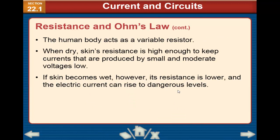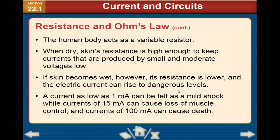The human body acts as a variable resistor. When the skin is dry, resistance is high enough to keep currents produced by small and moderate voltages low. If the skin becomes wet, its resistance is lower and the electric current can rise to a dangerous level. A current as low as 1 mA can be felt as a mild shock, while currents of 15 mA can cause loss of muscle control, and currents of 100 mA can be fatal.